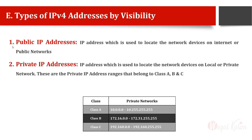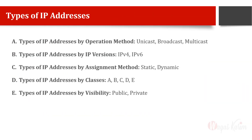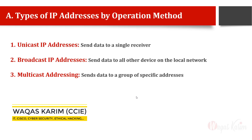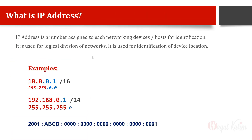In summary, there are five types of IP address classifications. Based on operation method: unicast, broadcast, and multicast. Based on version: IPv4 and IPv6. Based on assignment method: static or dynamic. Based on classes: A, B, C, D, and E — of which A, B, and C are usable in normal networks. Based on visibility: public and private. These five classifications cover all the ways IP addresses can be categorized.